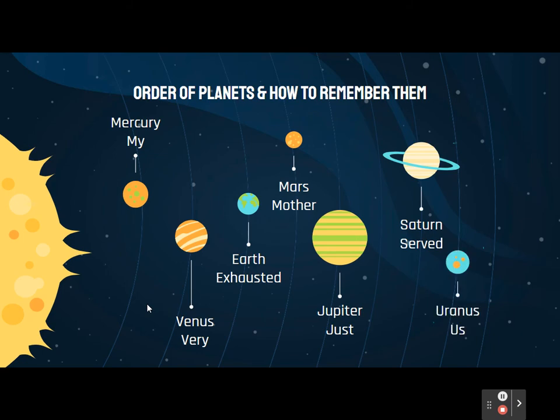Here's the order of our planets: Mercury, Venus, Earth, Mars, Jupiter, Saturn, Uranus, Neptune. The way we were taught to remember it is 'My Very Exhausted Mother Just Served Us Nachos,' because the first letter of each word is the first letter of each planet. When we had Pluto, it was 'My Very Exhausted Mother Just Served Us Nine Pickles.' But now we don't have Pluto as a planet anymore.